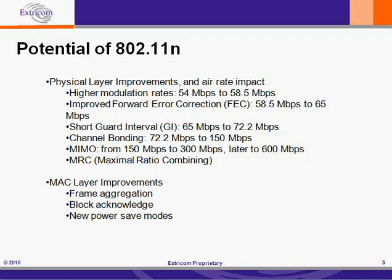In later phases of 802.11n, we're going to be seeing error rates of 600 Mbps. The other physical layer improvement is maximal ratio combining, or MRC. MAC layer improvements are also quite significant. Frame aggregation has a very significant impact on throughput. Block acknowledgement is another important MAC layer improvement, as well as new power saving modes.